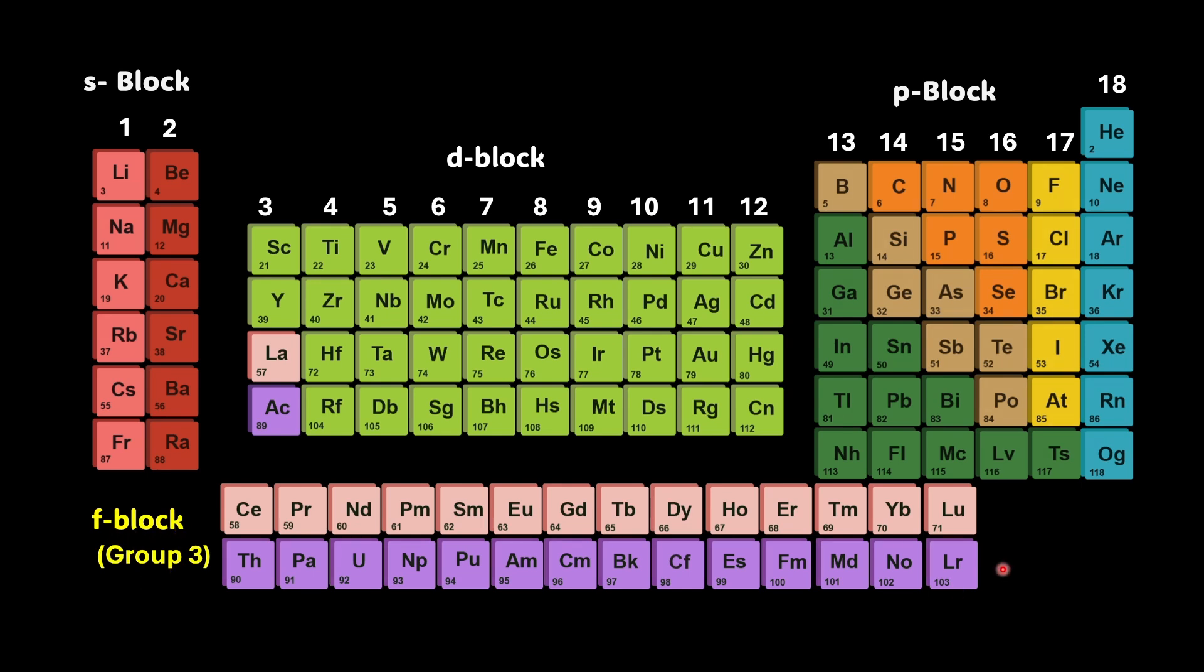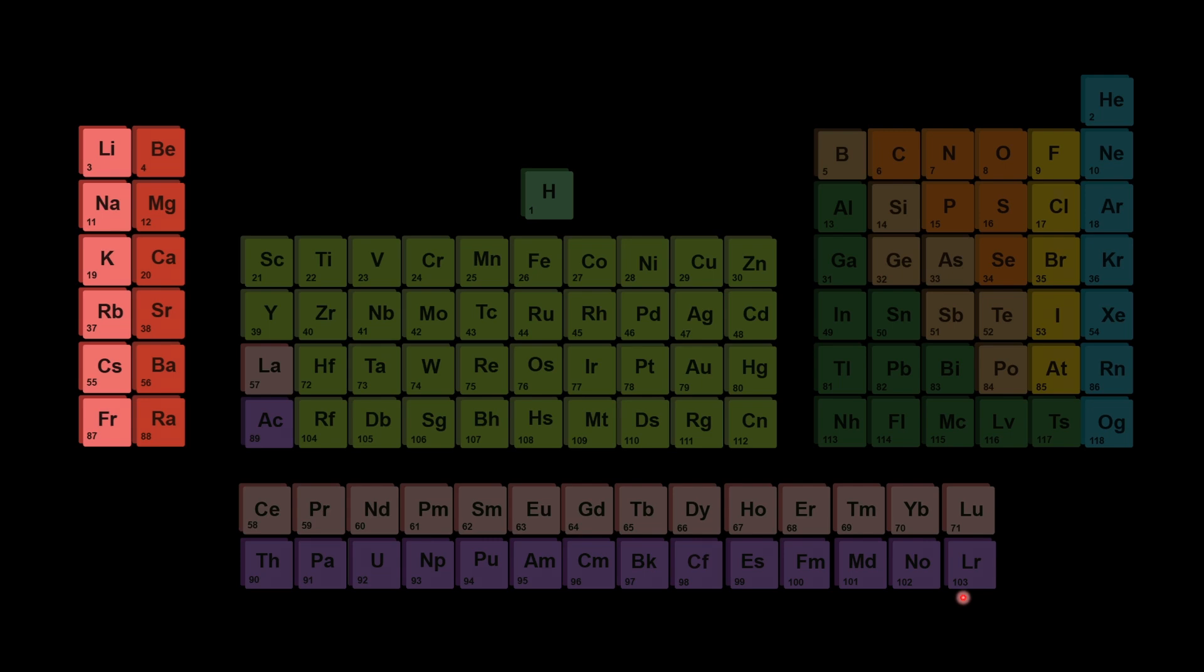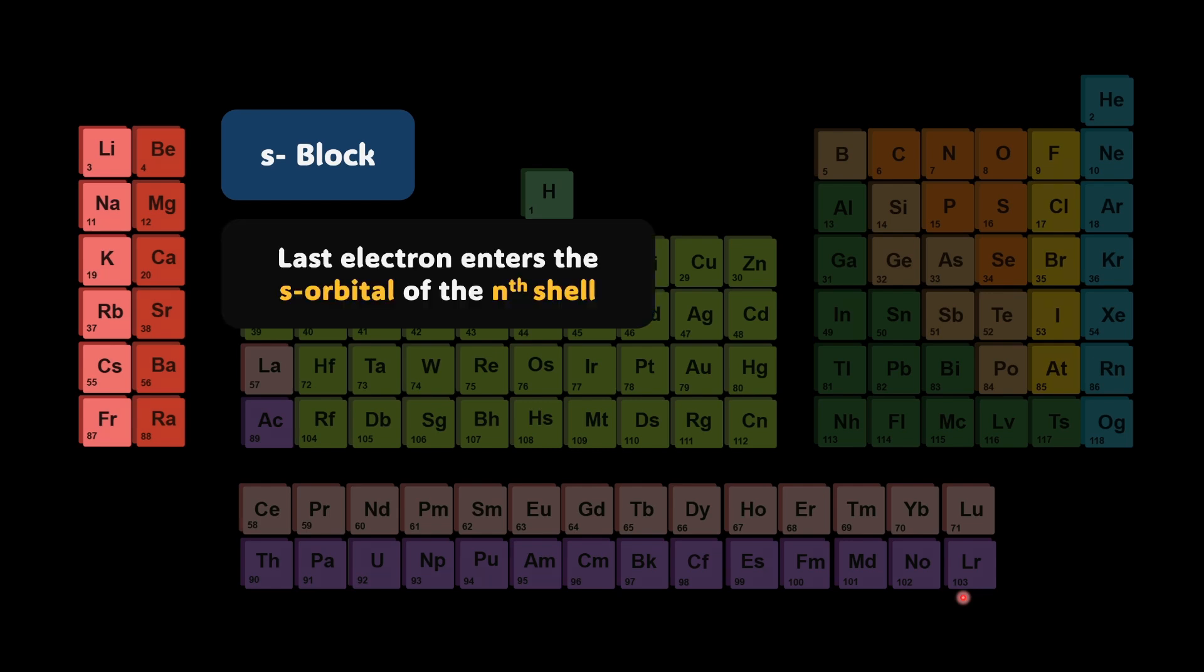Let's talk about each of them one by one. Let's begin with the S block. The S block elements are those where the last electron enters the S orbital of the nth shell. So lithium is 2S1, sodium 3S1, potassium 4S1, rubidium 5S1 and so forth.